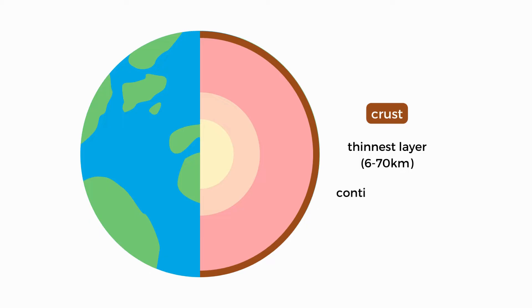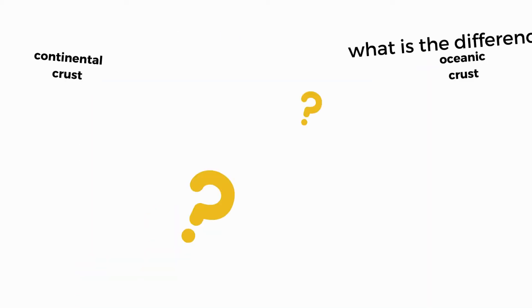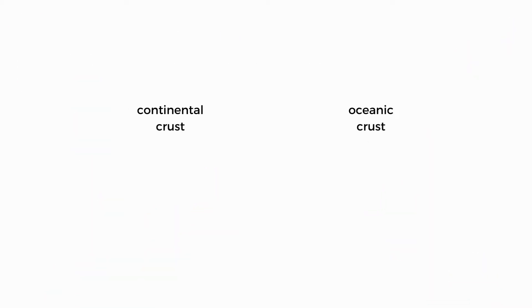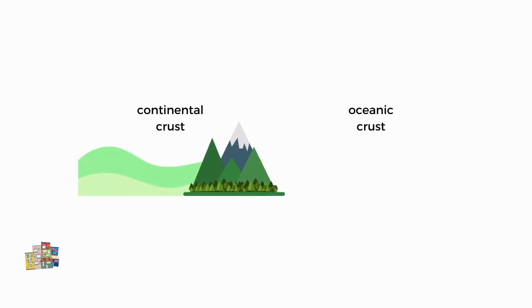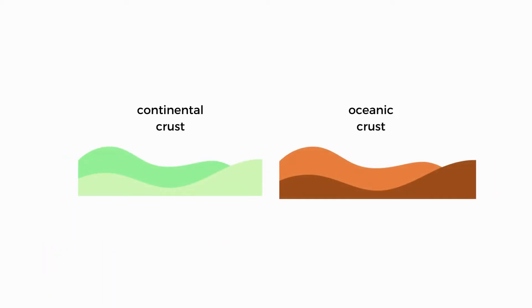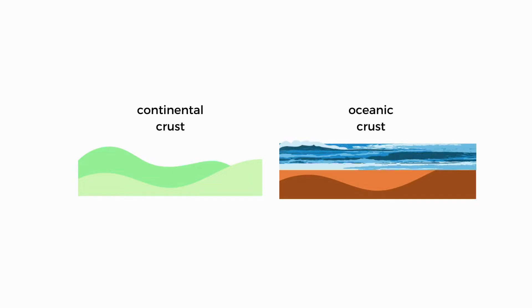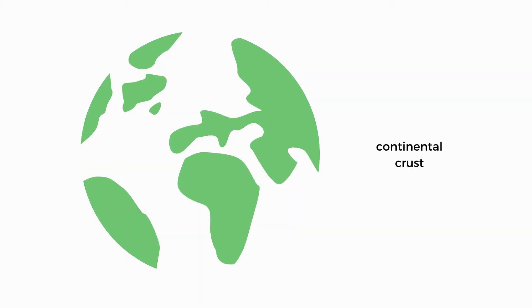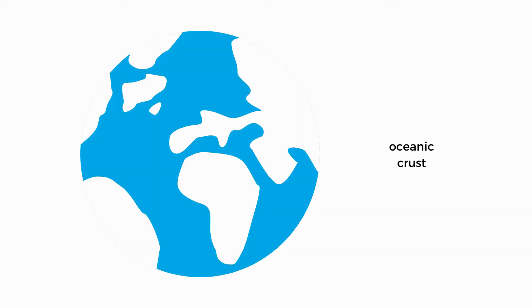The crust is also divided into two types: continental crust and oceanic crust. So what is the difference between the two? Continental crust forms our large land masses and it's what we live on. Oceanic crust, on the other hand, lies under the oceans. When you look at Earth, any large area of exposed land is continental crust and anything under the ocean is oceanic crust.